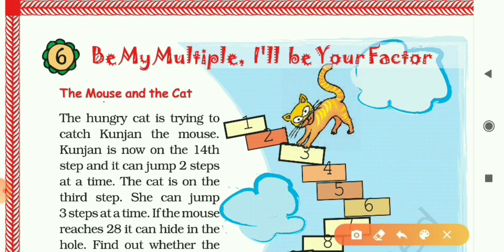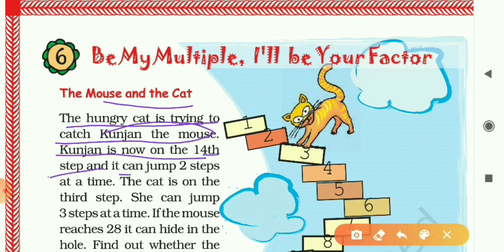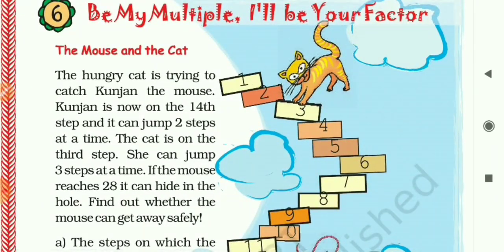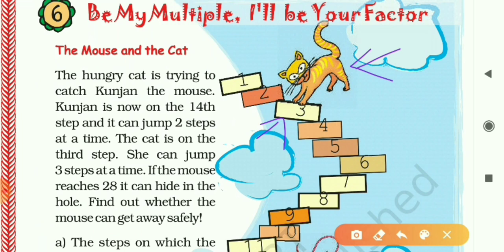Let's come to the first topic: The Mouse and the Cat, a story based on multiples. The hungry cat is trying to catch Kunjan the mouse. Kunjan is now on the 14th step and can jump two steps at a time. The cat is on the third step and can jump three steps at a time. If the mouse reaches 28, it can hide in the hole. Here is the cat on step three, taking three steps in one jump — so from 3 it goes to 6, then 9.